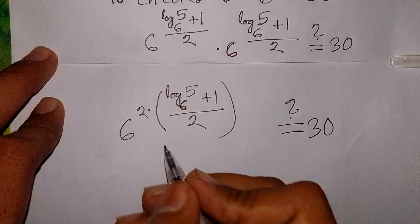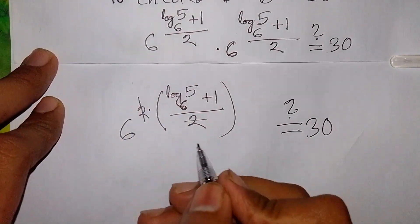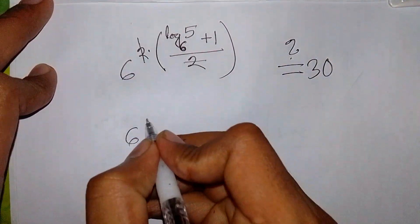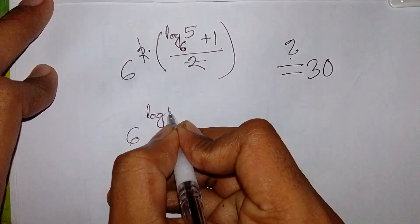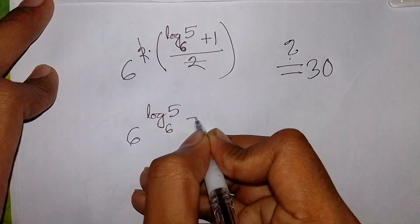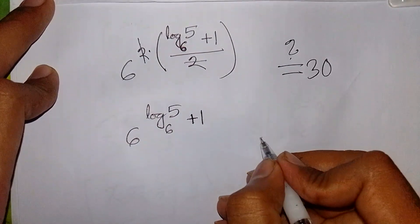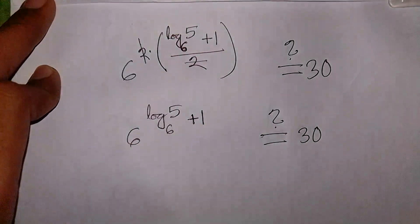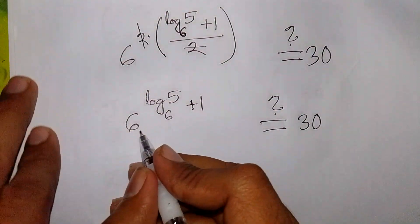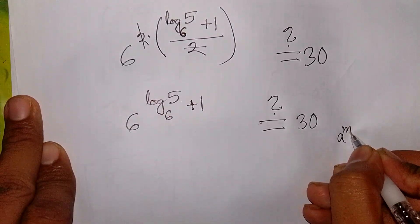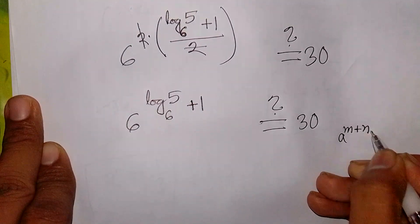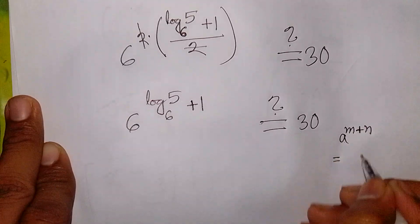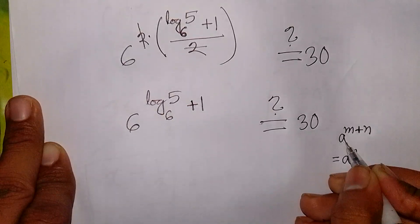We see this 2 will be cancelled, so we have 6 to the power of log base 6 of 5 plus 1, is it equal to 30? Now here I can apply the exponential rule that a to the power of m plus n is equal to a to the power m times a to the power n.